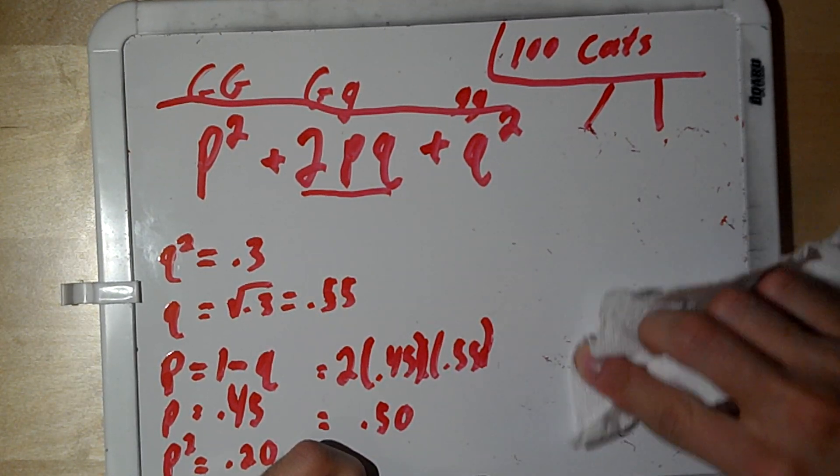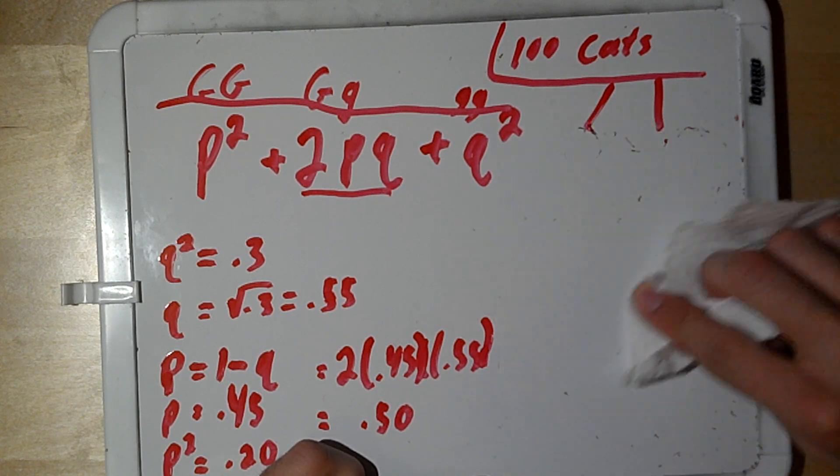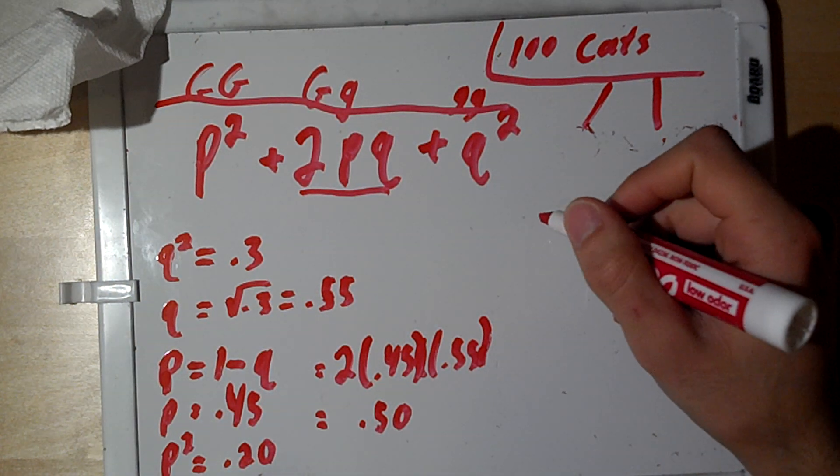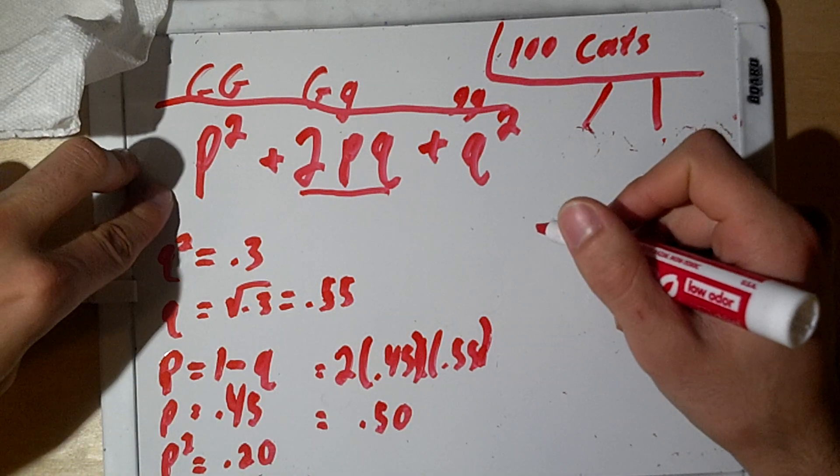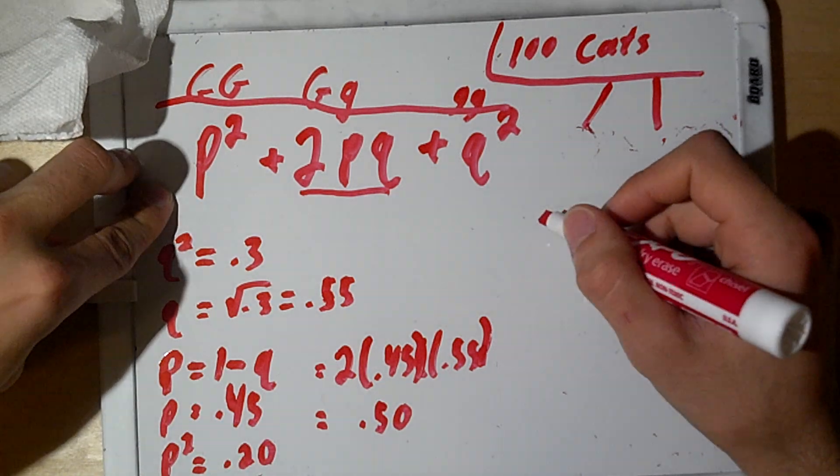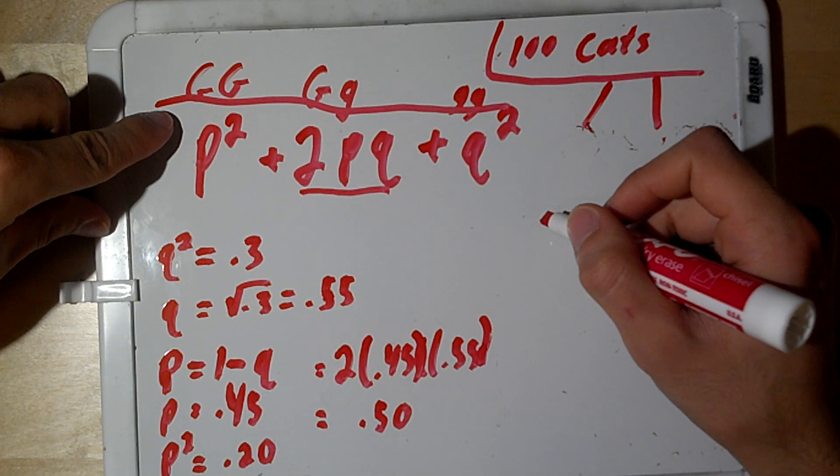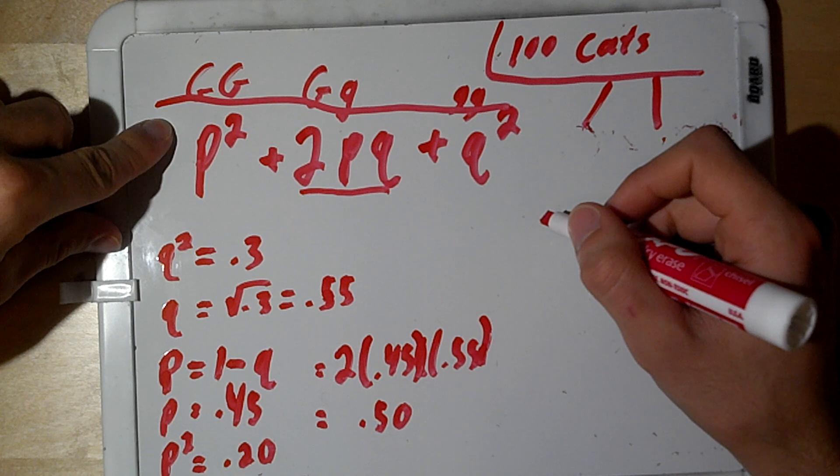Now, let's see what these numbers actually mean. So, we know that our p² is going to be 0.20. So, we know the allele frequency of the homozygous dominant combination within this population is going to be 0.20.